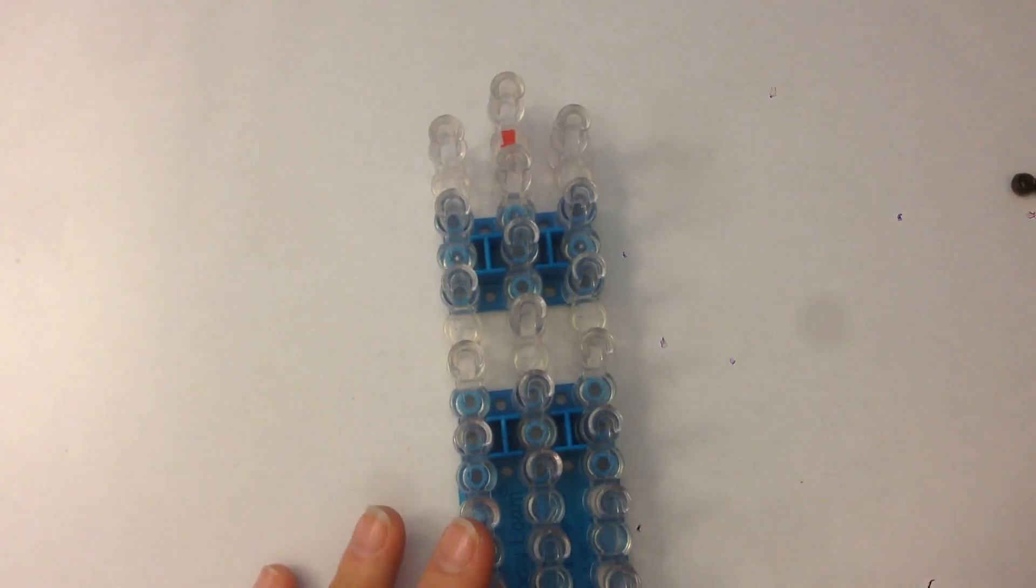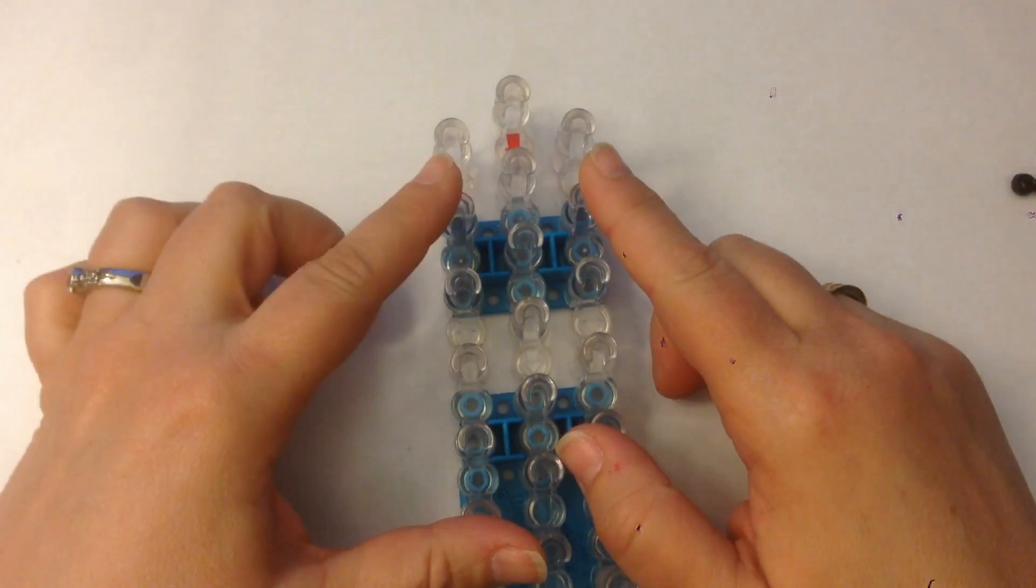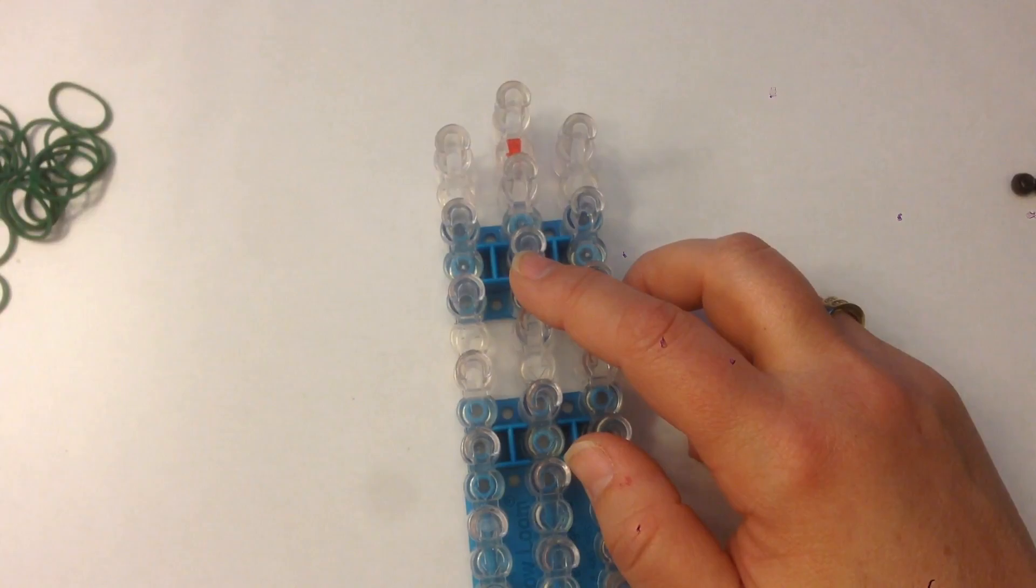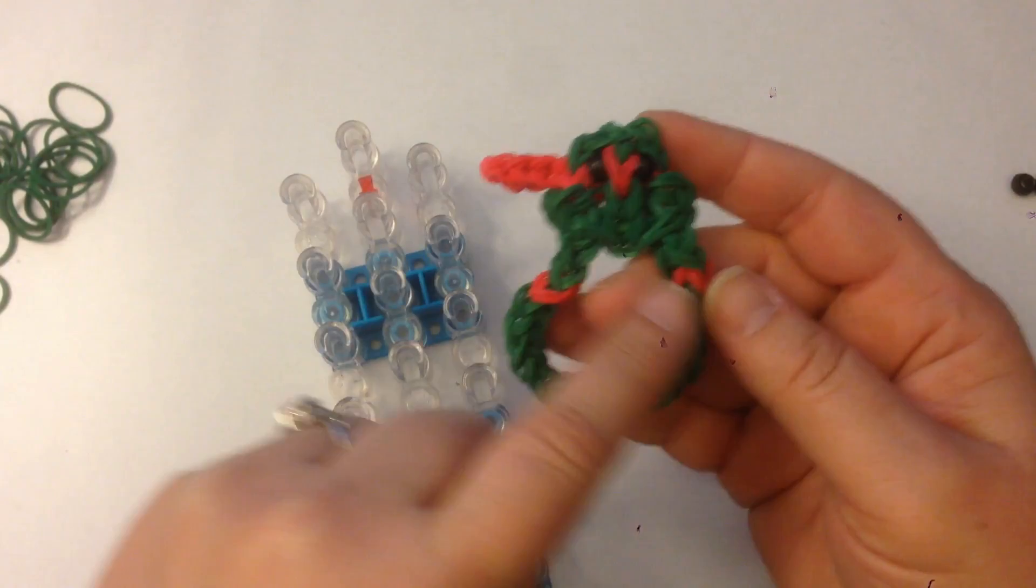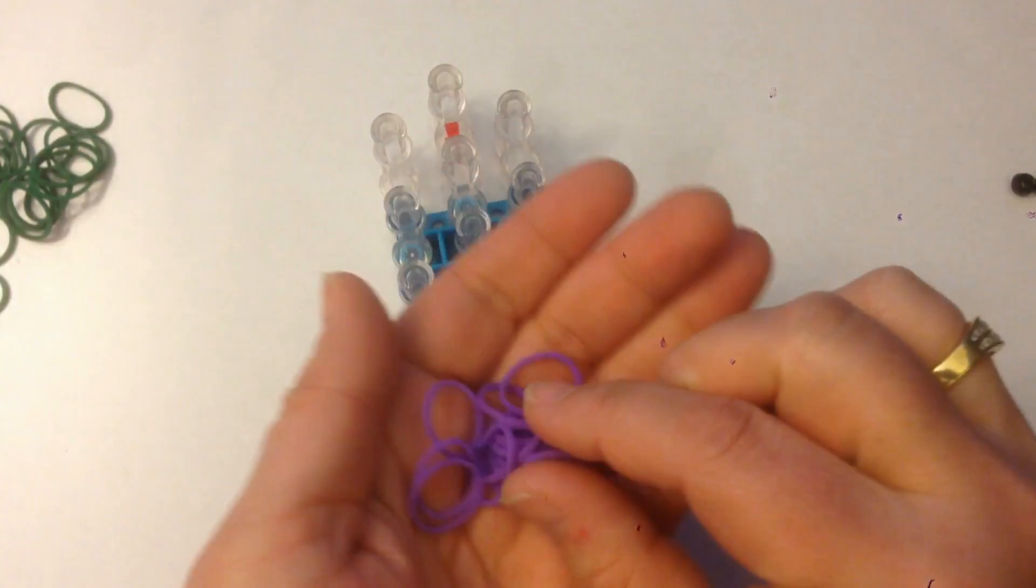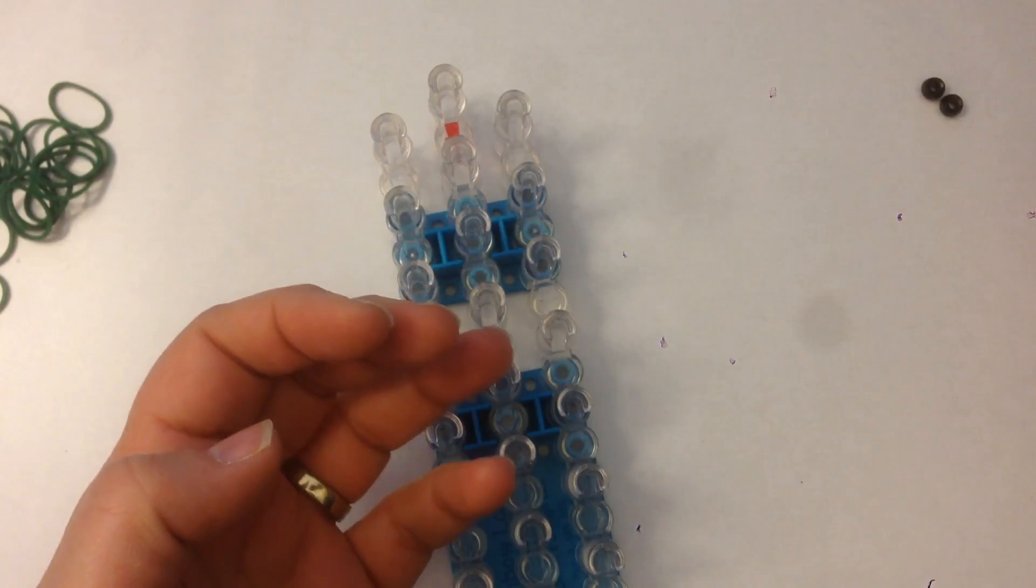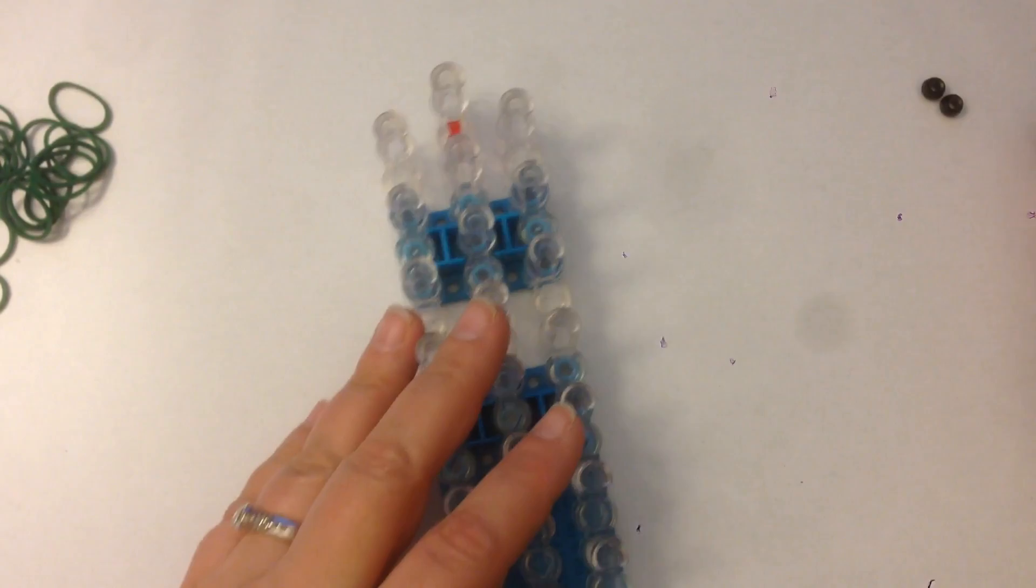So we're going to make it on a single loom in an offset position, which means columns 1 and 3 are going to be slightly lower than column 2. You're going to need green bands for the turtle, whatever color you decide for his bandana—I use them as his armbands and to tie off with. I'm choosing purple this time, and you're going to need some mini pony beads. I'm using black mini pony beads for his eyes and also a clip to close your bracelet at the end. So let's get started.